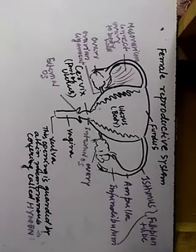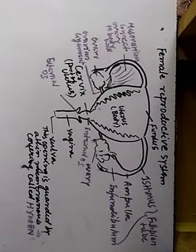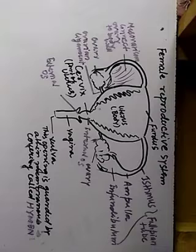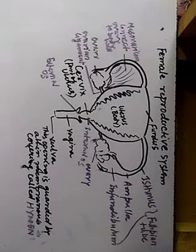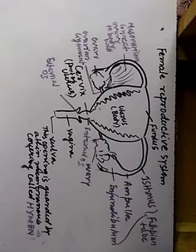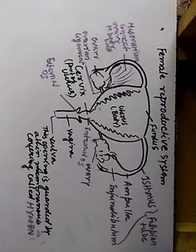From each ovary in alternate fashion. You can see the ovaries there. The ovary is connected to the uterus by a ligament called the ovarian ligament. The ovary is also attached to the abdominal wall by a membranous covering called mesovarium. Mesovarium connects the ovary to the body wall.